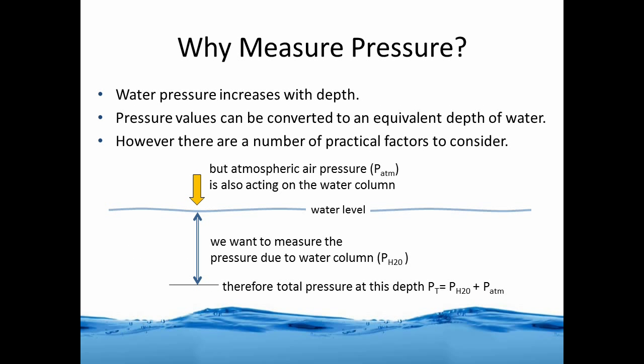Let's look at this diagram. Water pressure obviously increases with depth — we've all experienced it diving in pools where our ears feel more pressure as we dive deeper. These pressure values can be converted to an equivalent water depth value; however, there are a number of practical factors to consider. Looking at the diagram, you have two sets of arrows: the blue arrow represents what we want to measure — the pressure due to the water column at a particular depth below the water level. But we also have the effect of atmospheric air pressure acting on the same water column, so the total pressure at depth is the combined water plus atmospheric pressure.